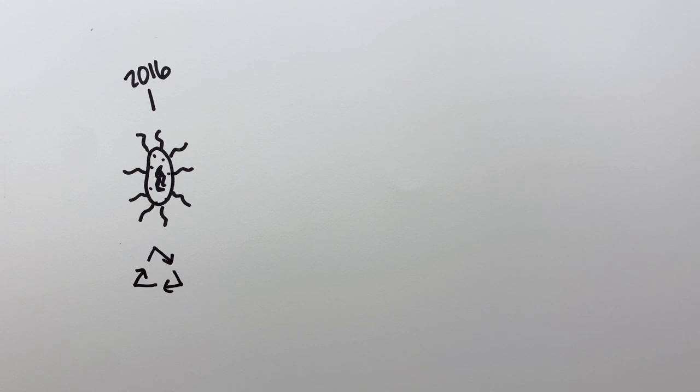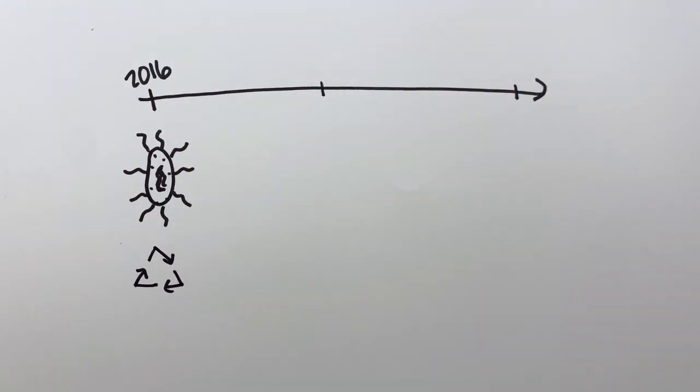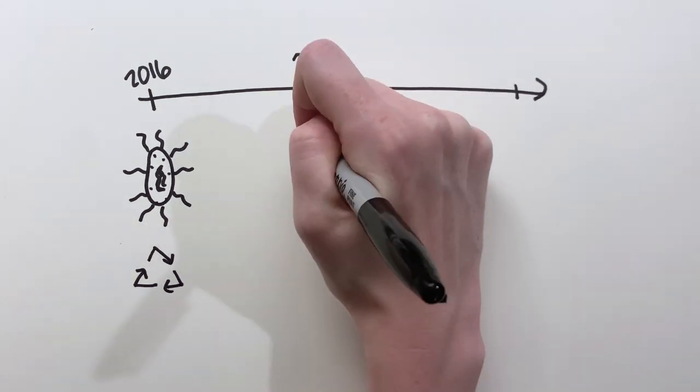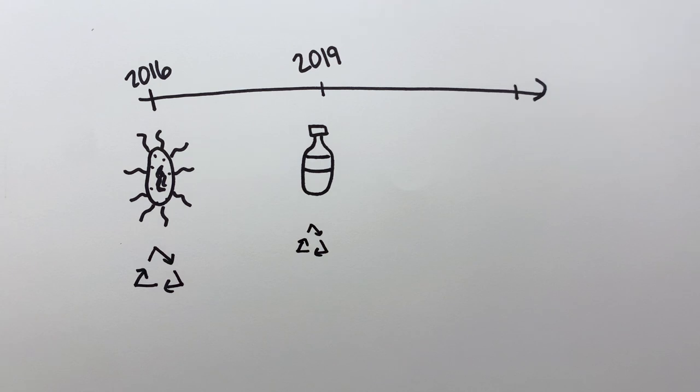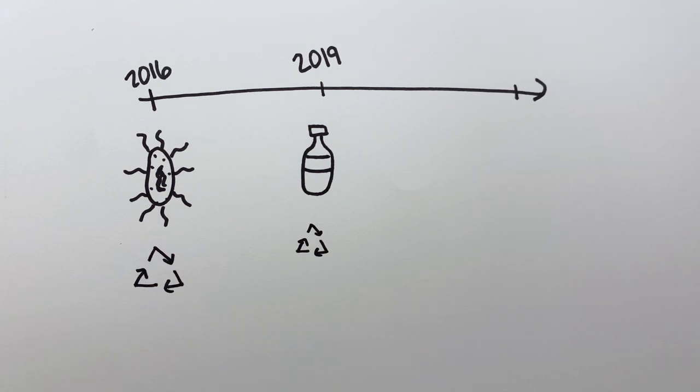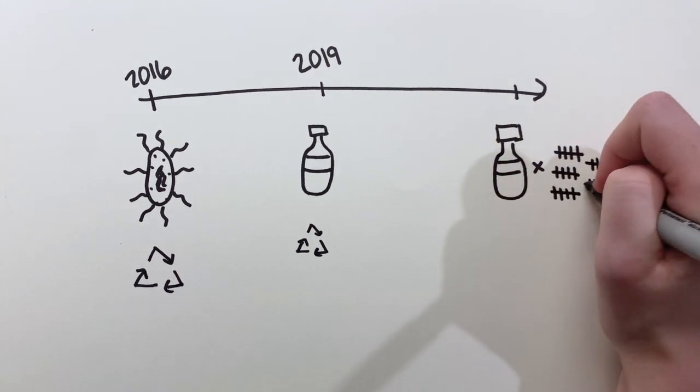Some companies have started using enzymes to recycle PET-based plastic, too. A French company called Carbios announced in February 2019 that they made the first bottles from PET that had been recycled with enzymatic recycling. The company still needs to scale their technology to use it commercially, but they say they hope to be operating around 2025.